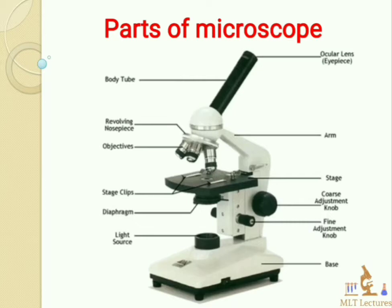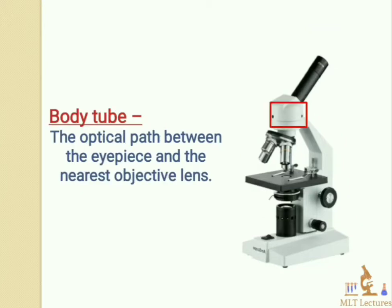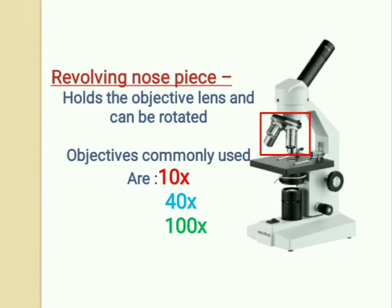The first part is the eyepiece — it allows you to view the image and contains the ocular lens, which is usually 10x. Then is the body tube, which is the optical path between the eyepiece and the nearest objective lens. The revolving nosepiece holds the objective lens and can be rotated.